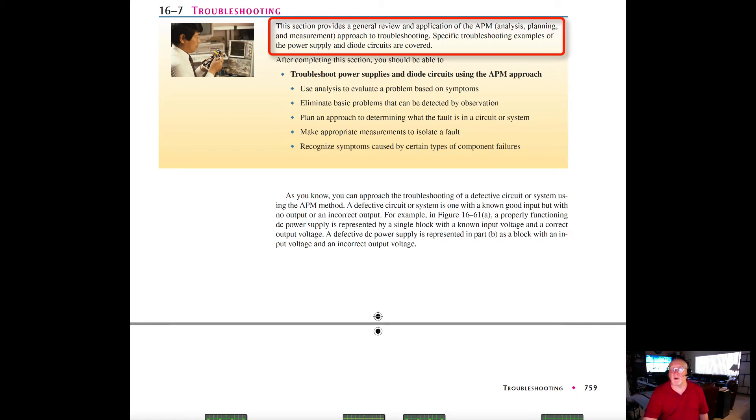Typically, I let your lab instructor cover the troubleshooting and emphasize the process. In your text, this section provides a general review and application of the APM method, where you look at analysis, planning, and measurement as an approach to troubleshooting. Specific troubleshooting examples of the power supply and diode circuits are looked at in this chapter.